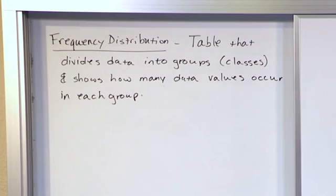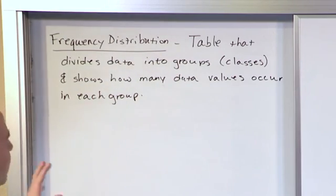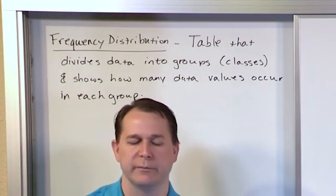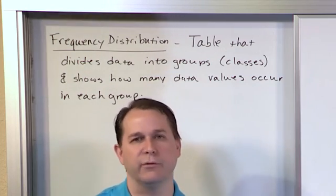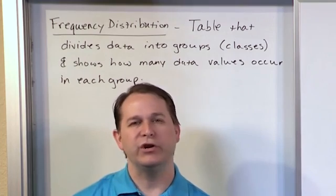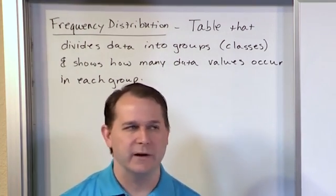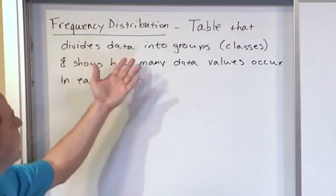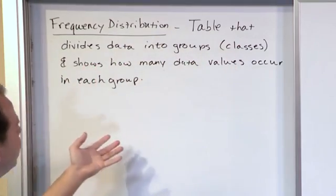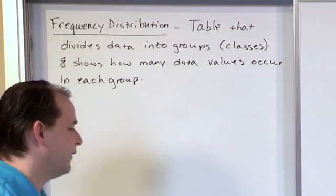Frequency distribution, boiled down, is just a table — that's all you really have to know. When someone talks about a frequency distribution — whether it's a book, a teacher, or whoever — what you need to know is it's just a table of information. It divides the data into groups, and we call these groups classes. And it shows how many data values occur in each group.